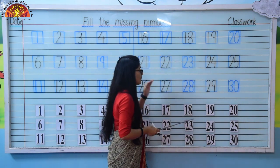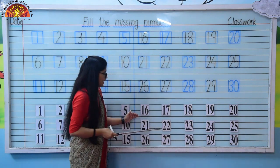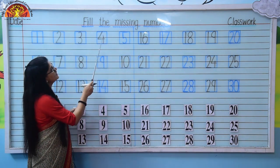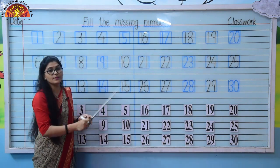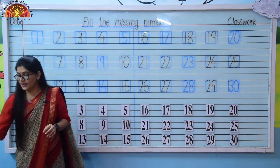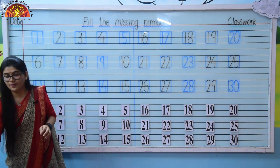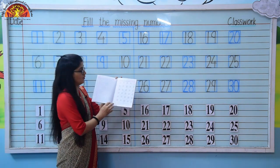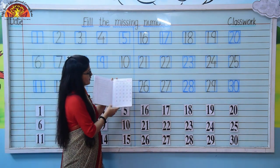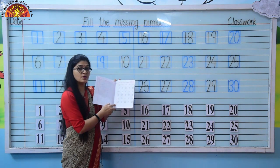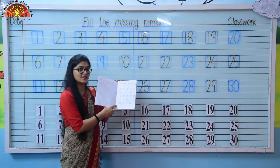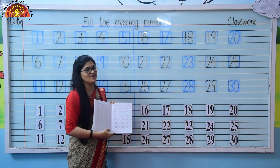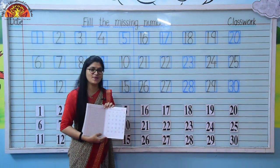So kids, in this way you have to complete this exercise — fill the missing numbers in your practice notebook. Like this, you have to do this exercise. Thank you so much kids. Have a nice day. Bye-bye.